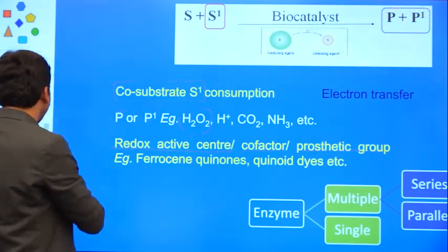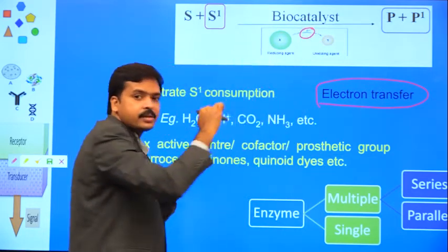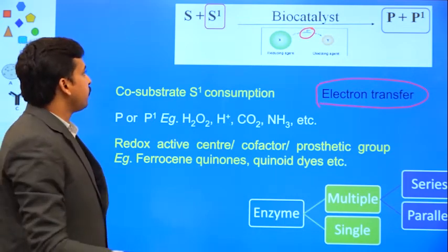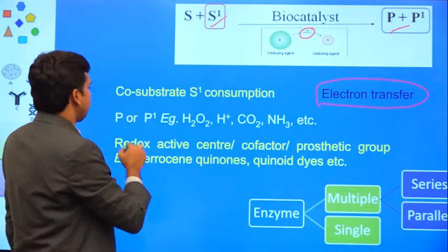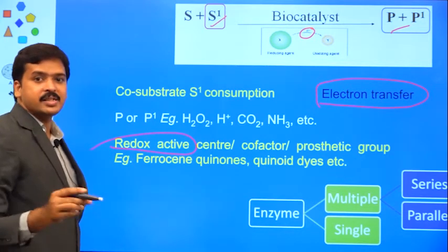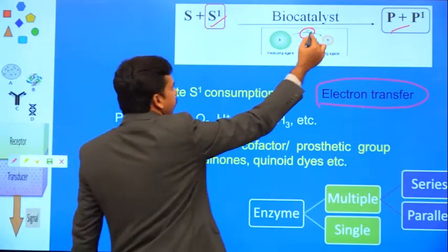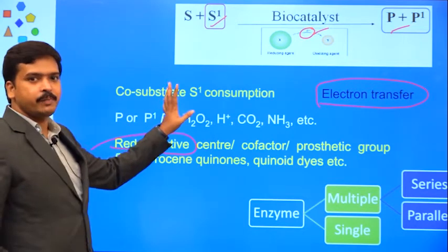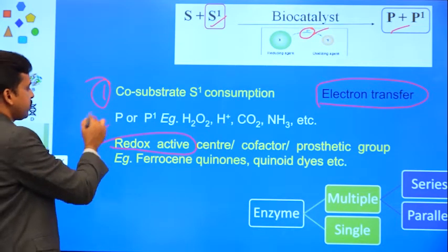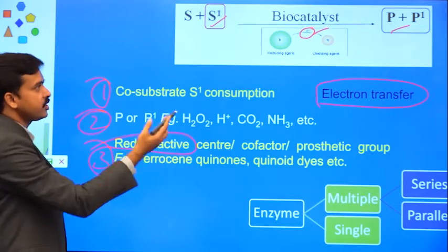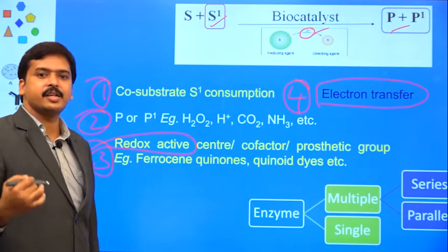Another important strategy is electron transfer. This is what happens in third generation biosensors. Measuring substrate or product used to happen during first generation biosensors. In second generation biosensors, the involvement of mediators came into the picture. In third generation biosensors, if the reaction itself is initiated, that is enough — it directly measures the electron transfer. In this way, whenever an enzymatic reaction happens, there are four different strategies: co-substrate consumption, product measurement, redox active involvement, and electron transfer.